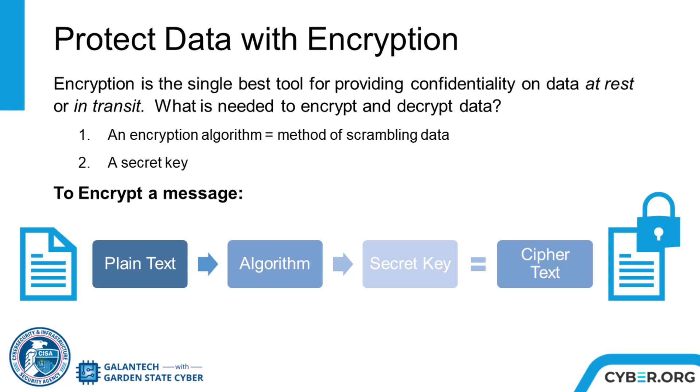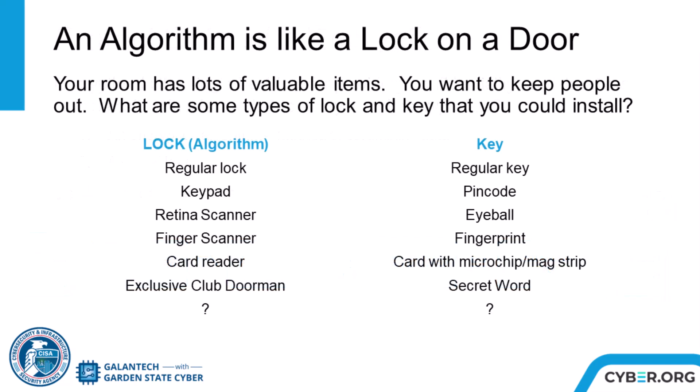Let's take a deeper look at what makes encryption strong enough for cybersecurity. A lock on a door is a method to keep it closed. This is similar to an algorithm, which is a method to keep information closed to people who shouldn't be seeing it. Here are some different types of methods that can be used to keep a door closed, but still let authorized people in.